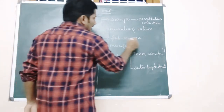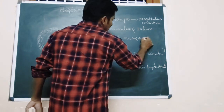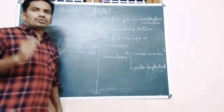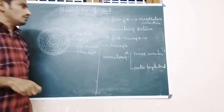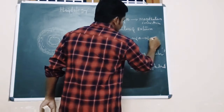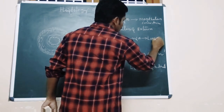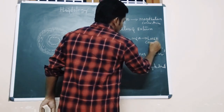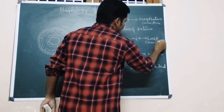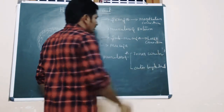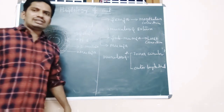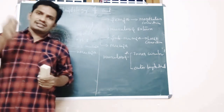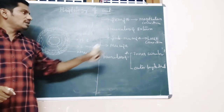The submucosa is made up of loose connective tissue, which is supplied with more blood vessels and capillaries, and nerves.